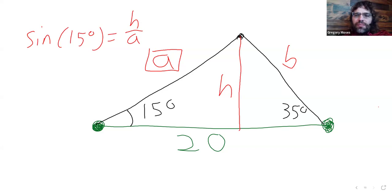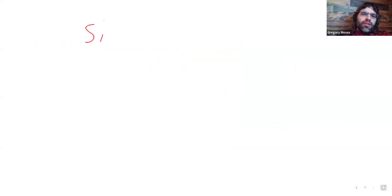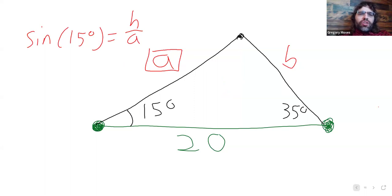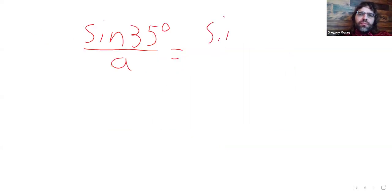And no sooner said than done practically. If we want to find a, we'll write the sine of 35 degrees over a equals what? Well, the other angle we have written down is this 15 degrees. But you can see that this isn't very helpful, because it leaves us with two unknowns, this a and this b.